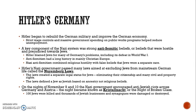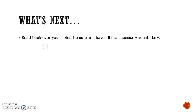On the nights of November 9th and 10th, the Nazi government encouraged anti-Jewish riots across Germany and Austria, which became known as Kristallnacht, or the Night of Broken Glass. Hundreds of Jews were killed, and thousands of Jewish businesses and synagogues were damaged and destroyed — and this was just a little bit of what was yet to come. Now that you've finished watching the video, please read back over your notes and be sure you have all the necessary vocabulary. Thanks for joining me, and I'll see you in class.